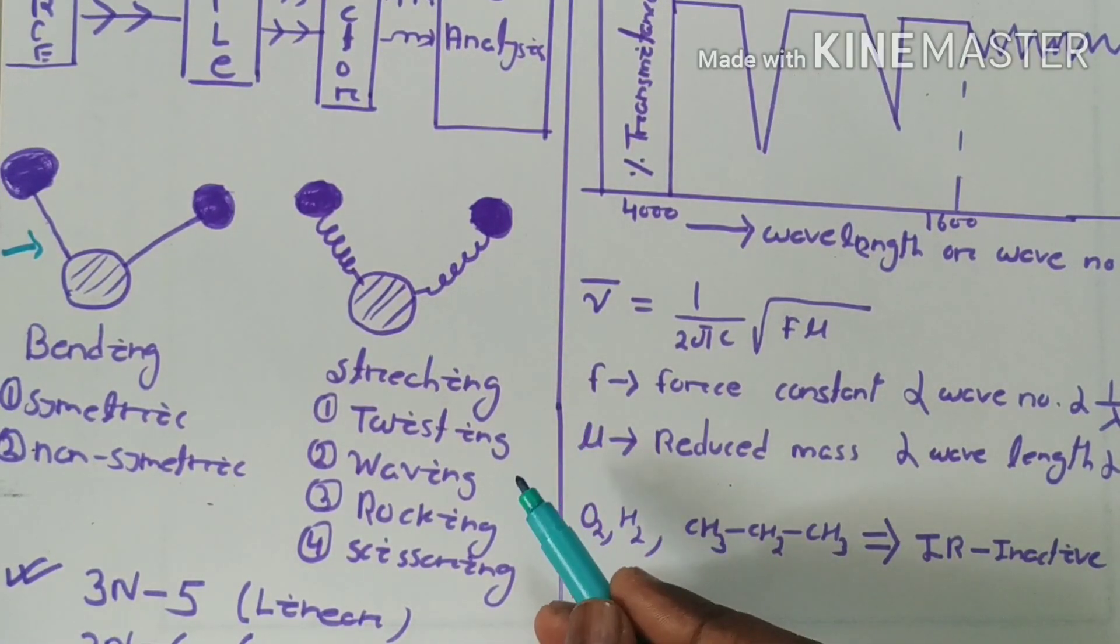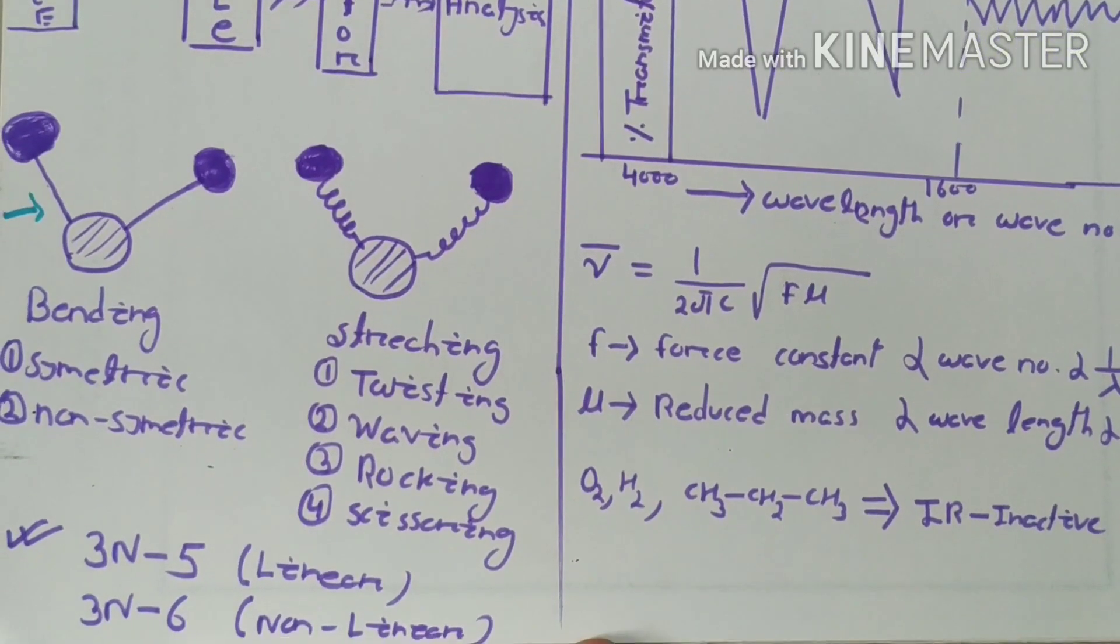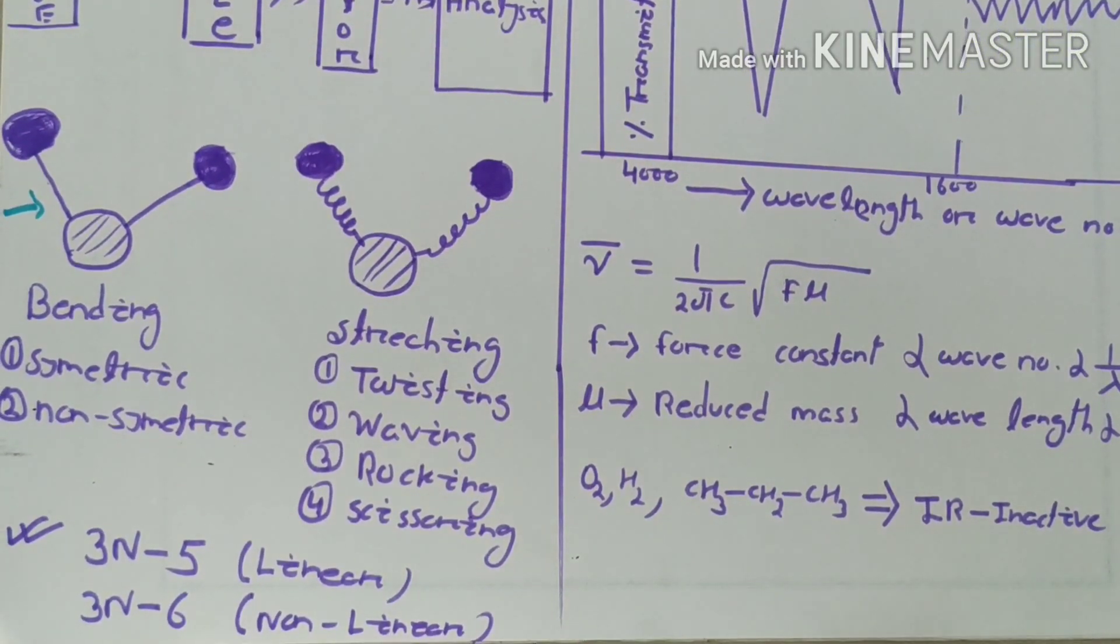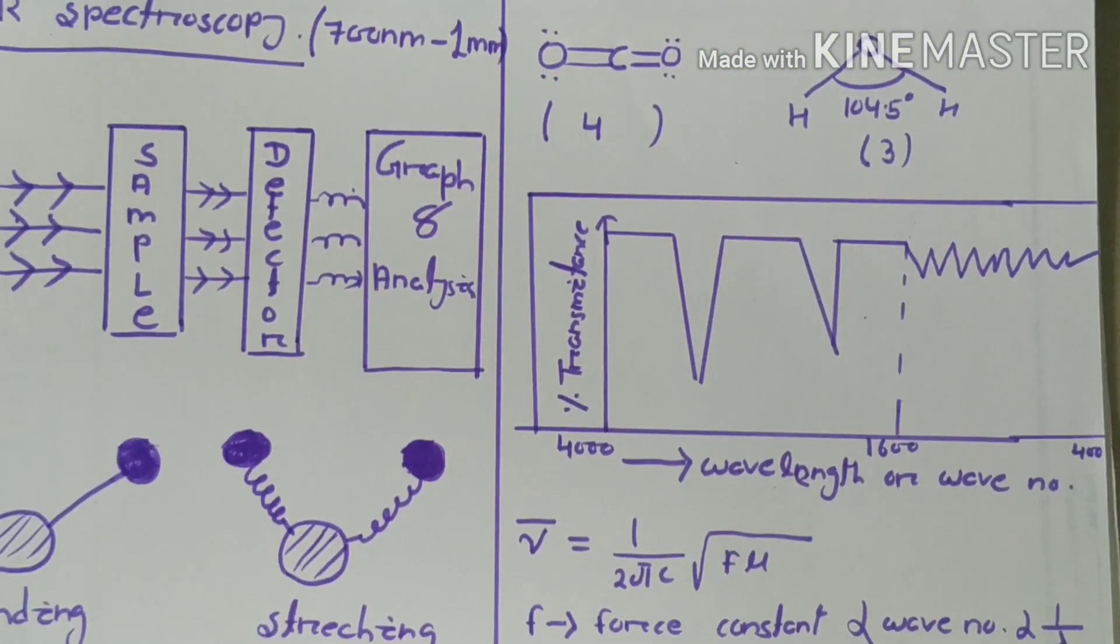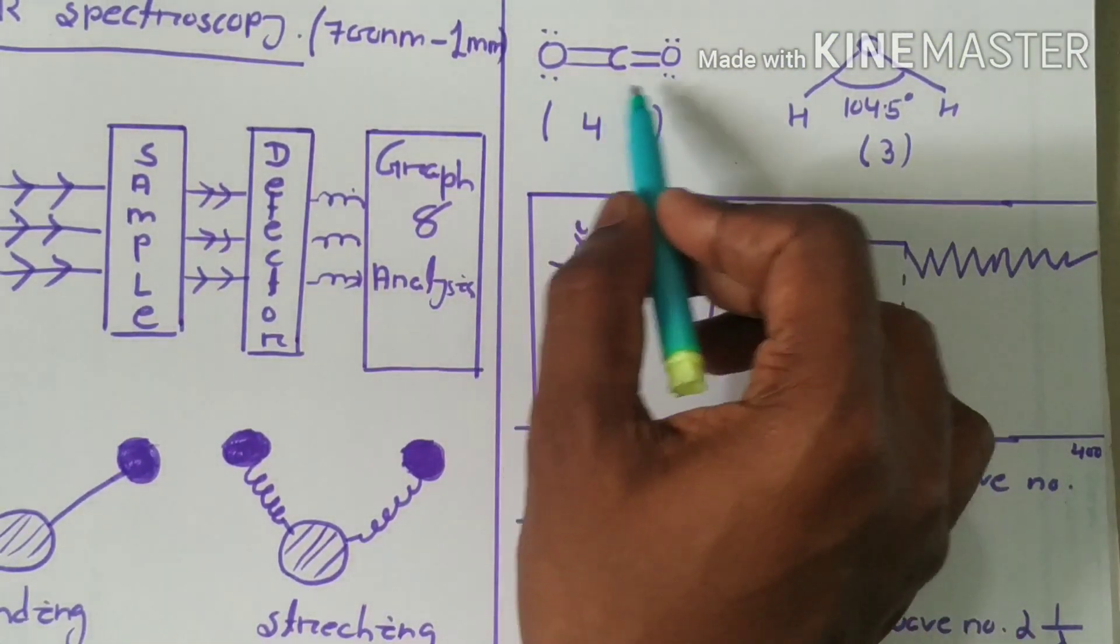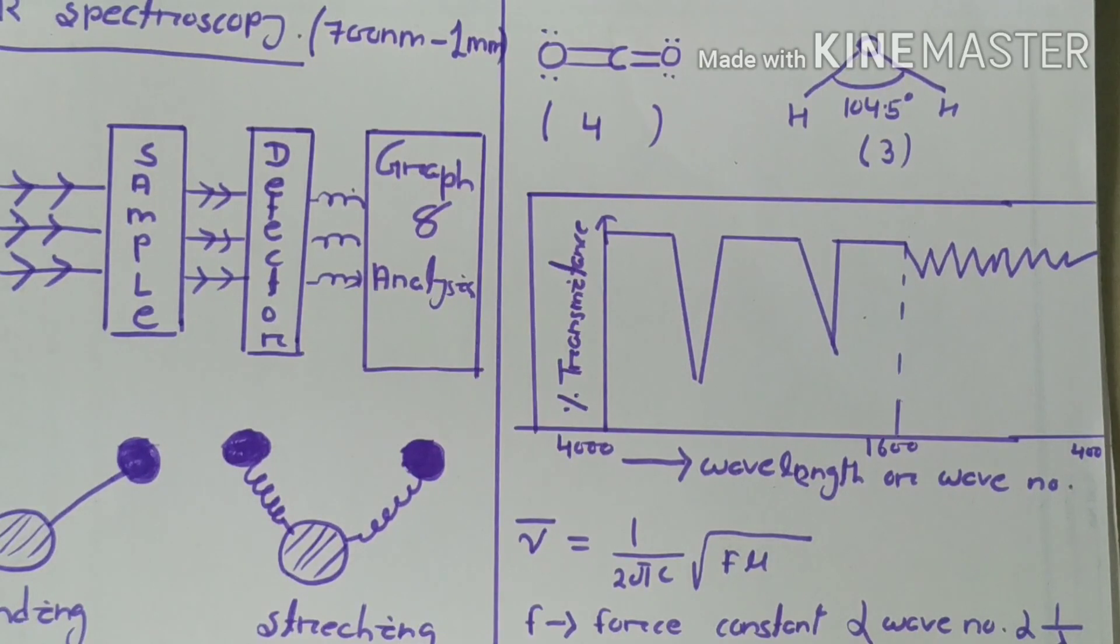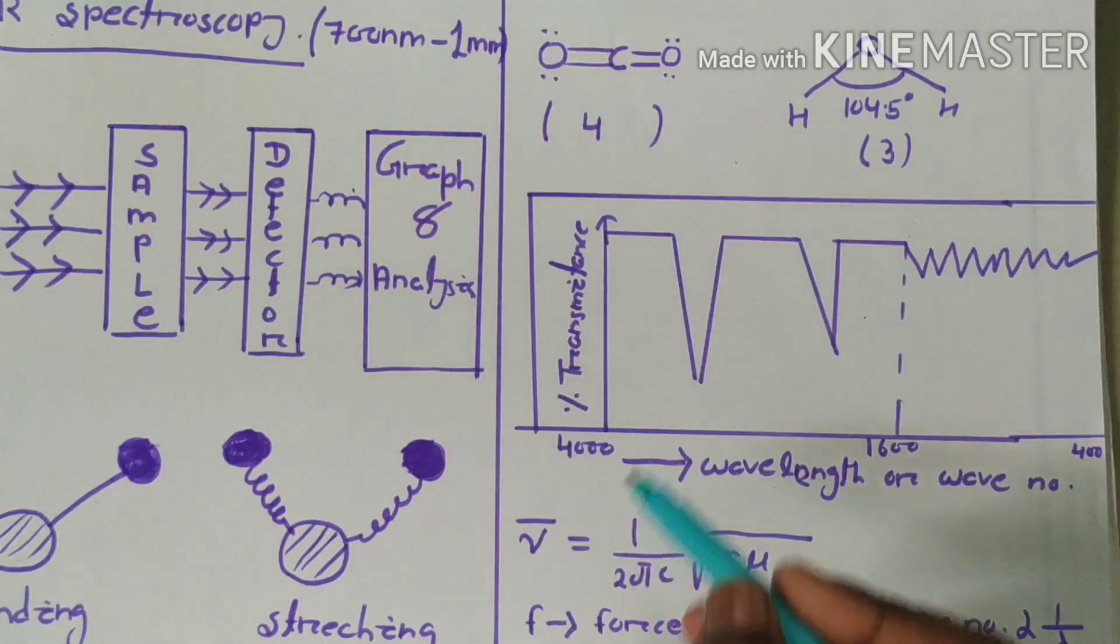The number of vibrations can be calculated using the formula 3n minus 5 for linear molecules and 3n minus 6 for nonlinear molecules. For example, if we go through the structure of CO2, which has a linear structure, using the formula 3n minus 5, we can calculate the number of vibrations is four.